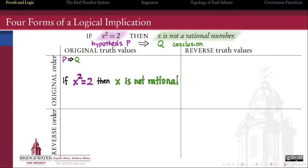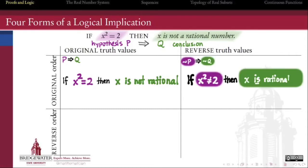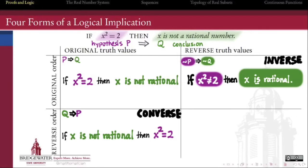Remember, we can form related statements by reversing the truth value of its pieces, by reversing the order of its pieces, or by reversing both.